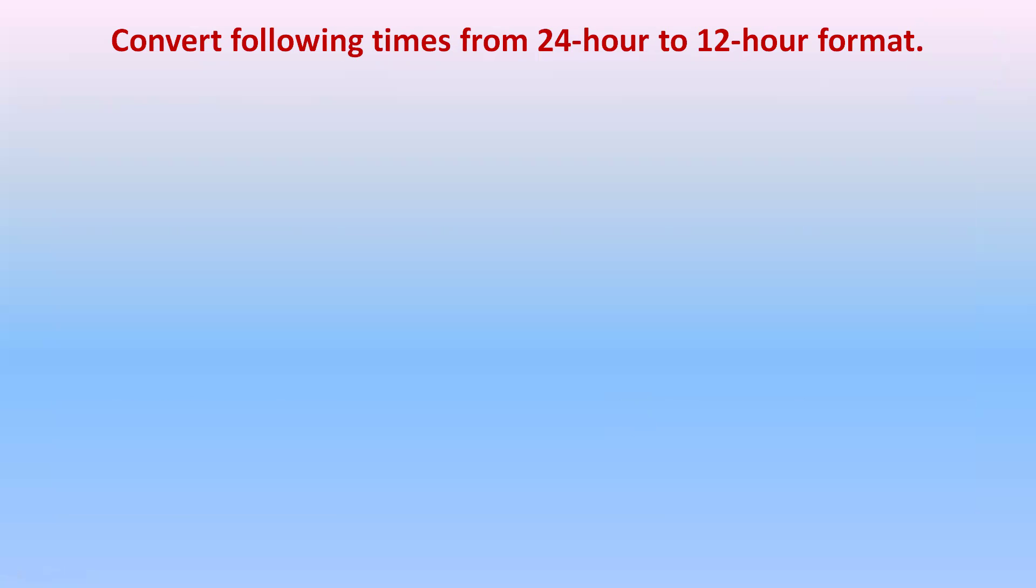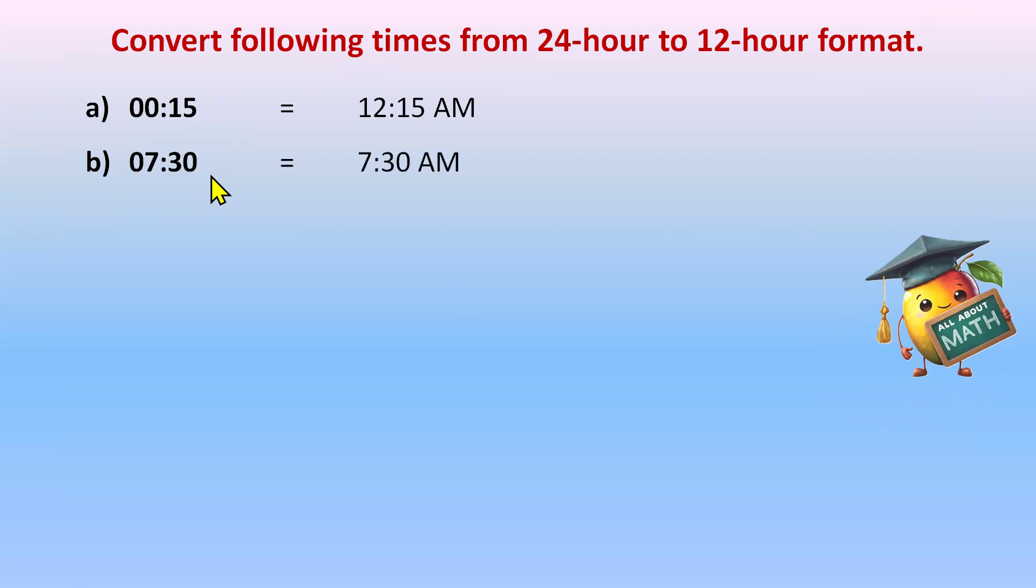Let's do some examples. Convert the following times from 24 hour to 12 hour format. So part A we have 00:15. 00 is the starting of the day, so it's 12:15 A.M. Part B we have 07:30. You'll just check the hour, 7 is less than 12, so 7:30 A.M. will be written as it is.